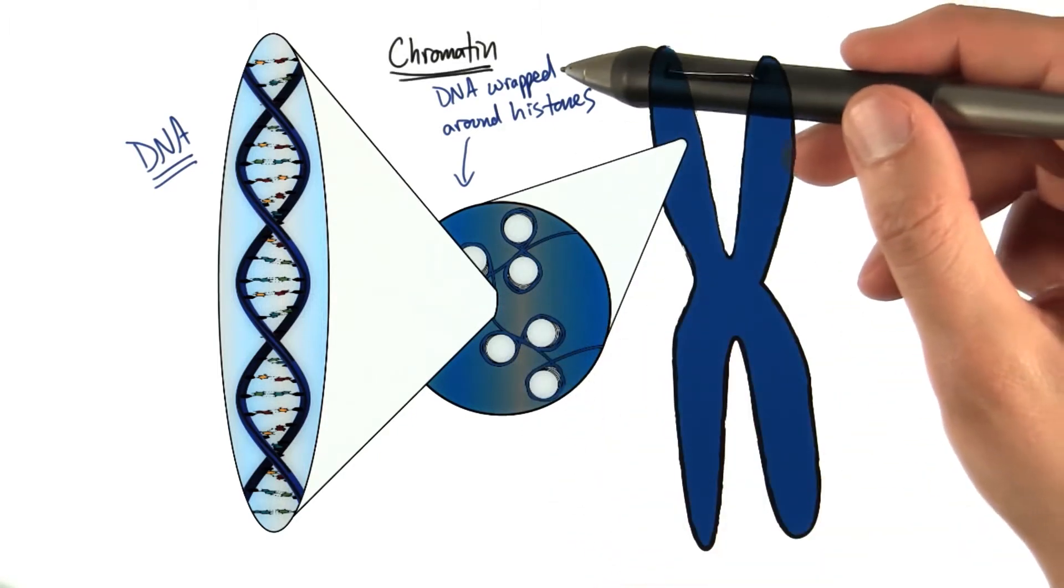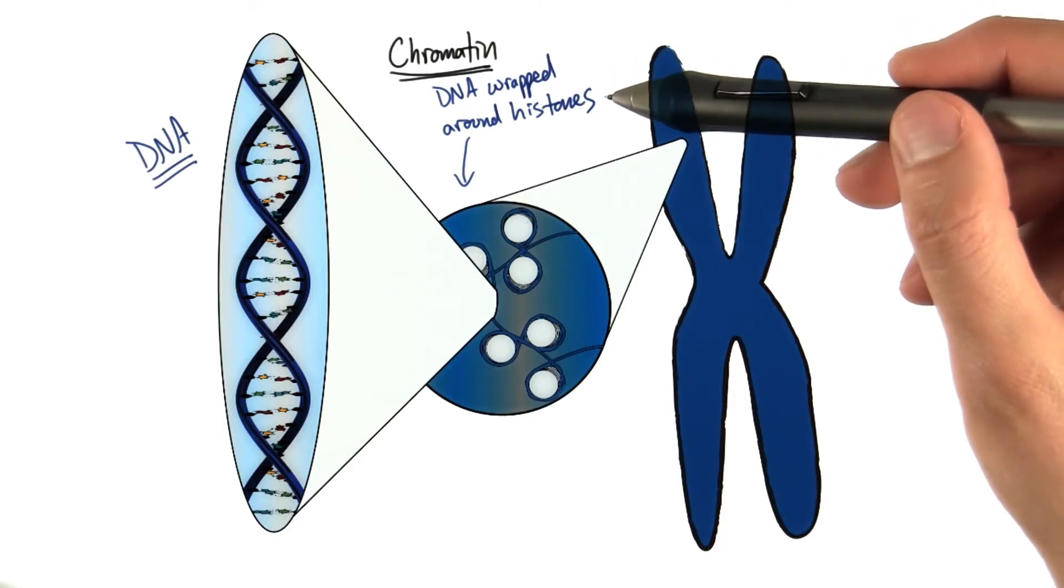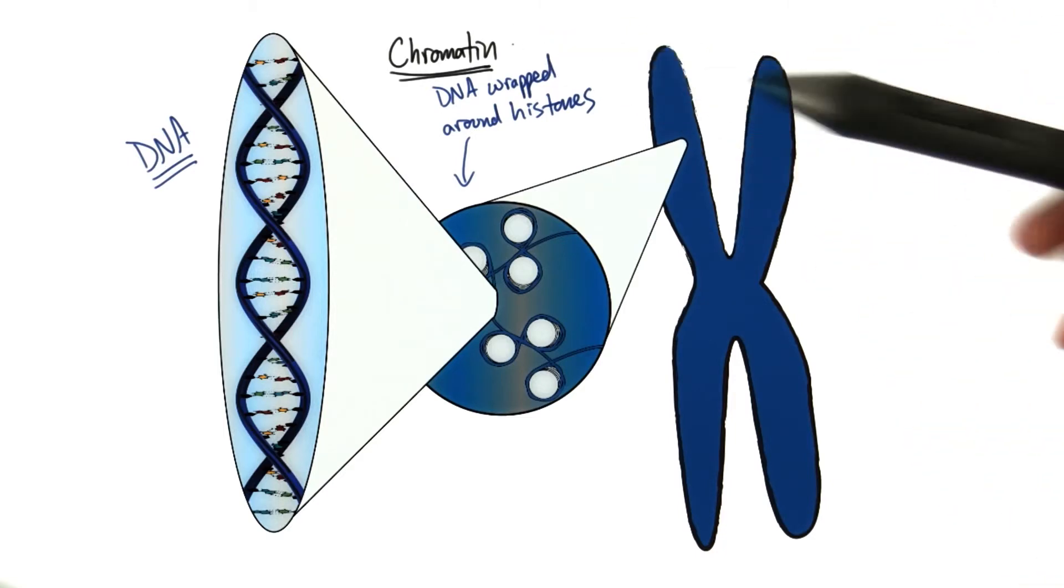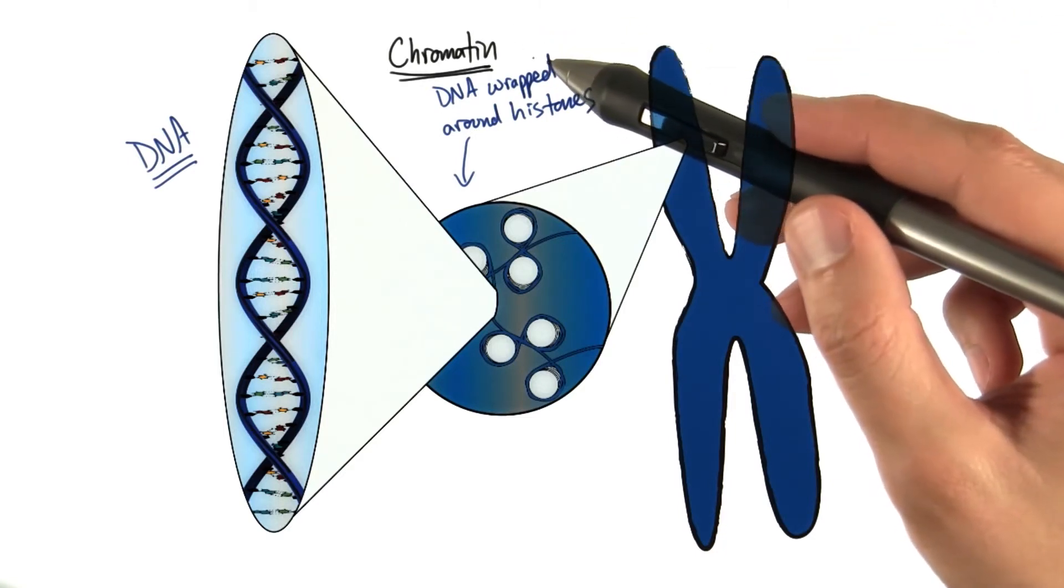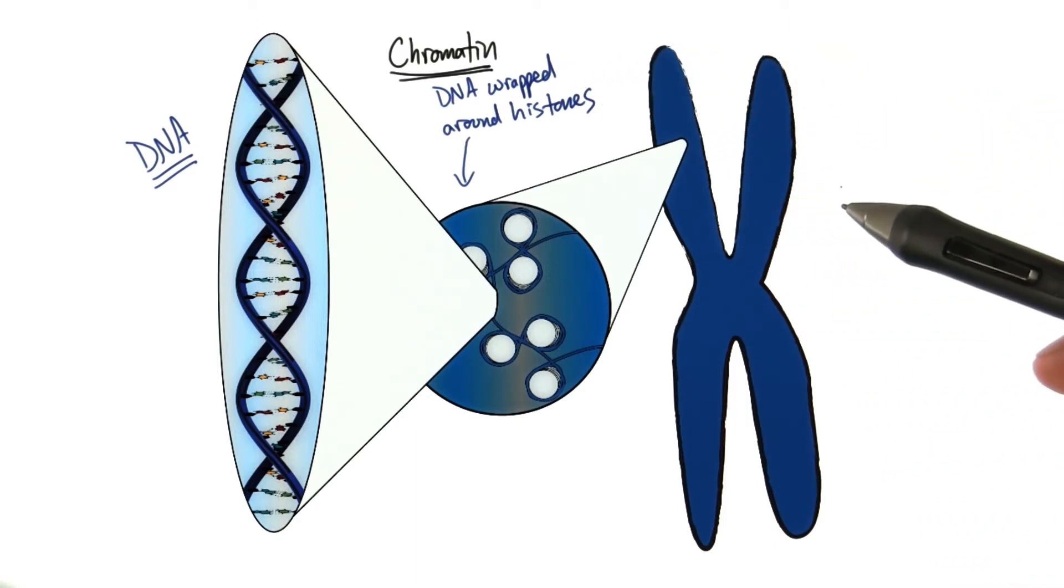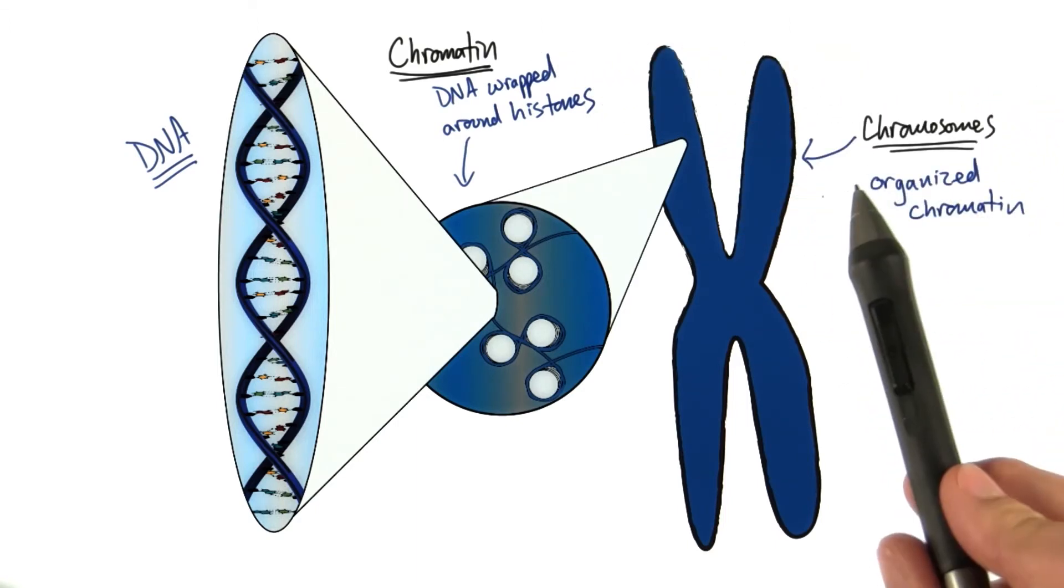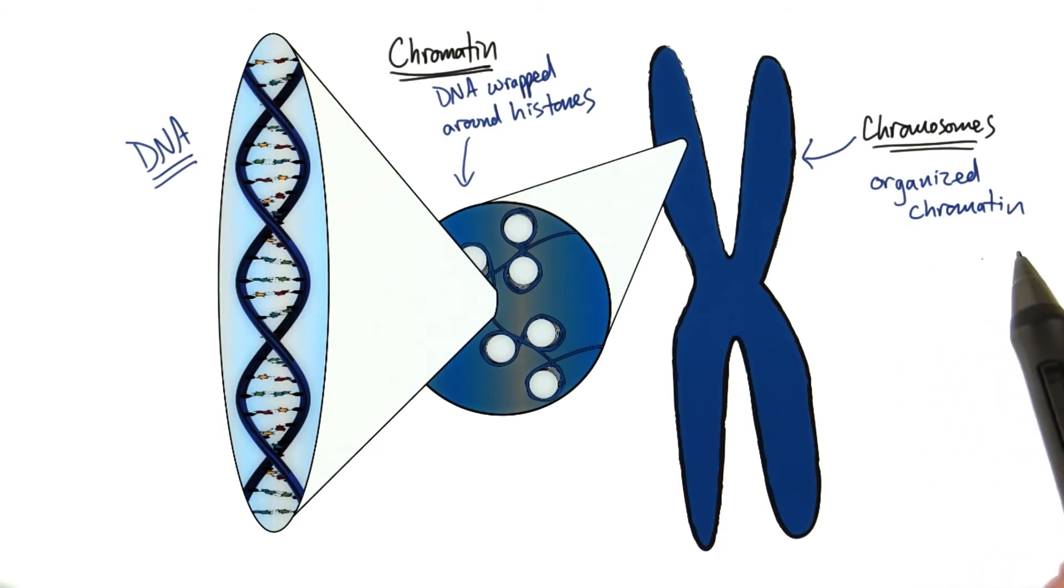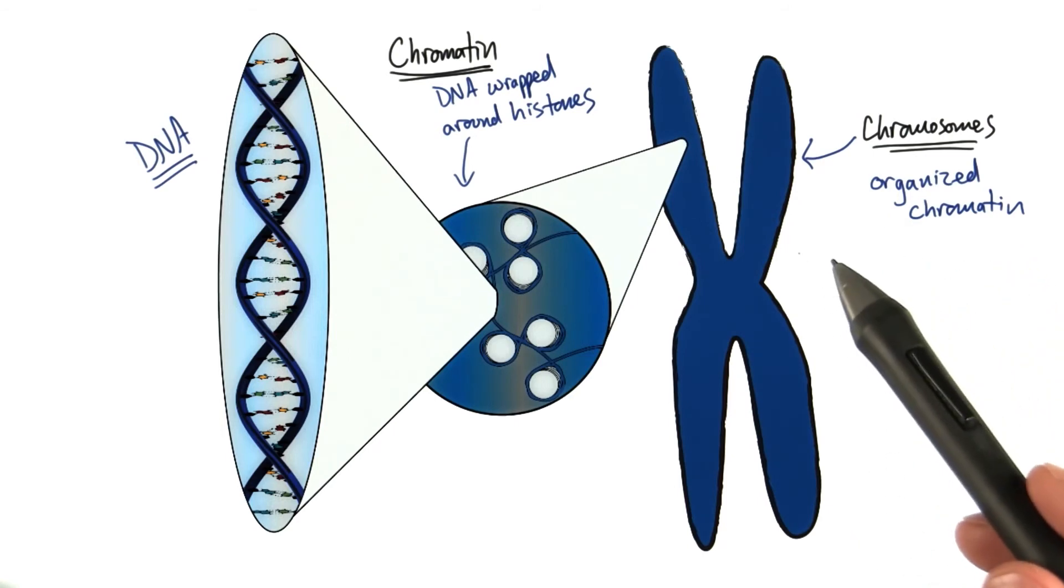We actually call DNA wrapped around histones chromatin. And then chromatin is organized into structures called chromosomes. Chromosomes are actually organized chromatin, and you have multiple chromosomes in the cells in your body.